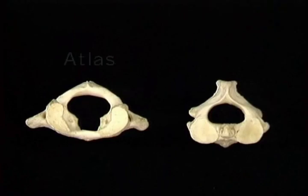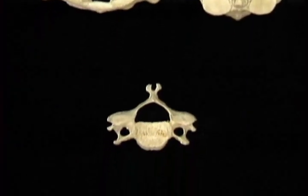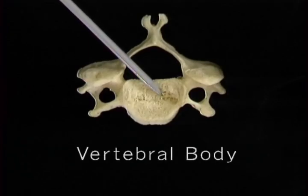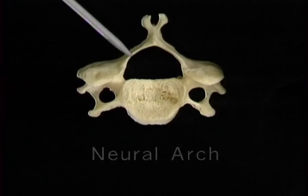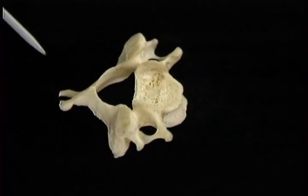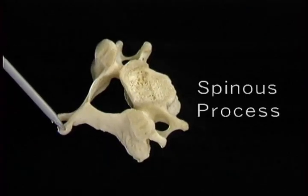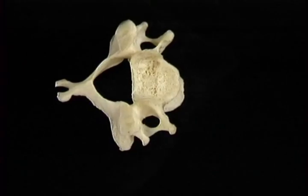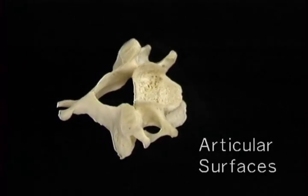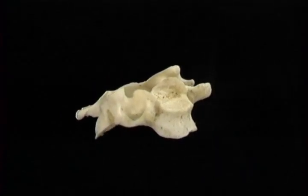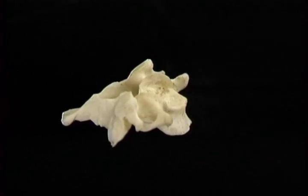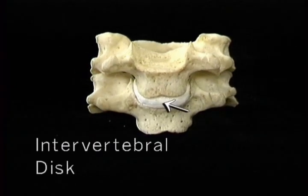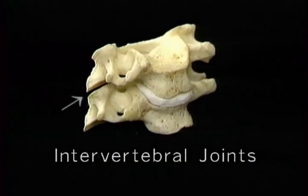Because of their special functions, the atlas and the axis differ in several ways from typical cervical vertebrae. As we've seen in volume three, a typical cervical vertebra has a body in front and a neural arch behind, enclosing the vertebral foramen. It has a spinous process behind with two tuberosities, and a transverse process on each side also with two tuberosities. On each side there are two articular surfaces, one above and one below, which form the intervertebral joints. The articular surfaces slope upward and forward, connected by this mass of bone, the articular pillar. Each vertebra is joined to its neighbors by an intervertebral disc in front and by two intervertebral joints behind, one on each side.